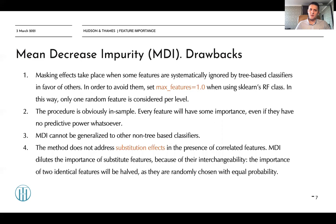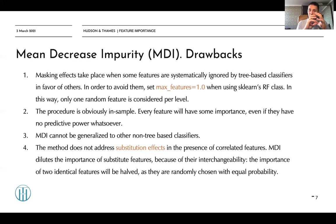Let's discuss several drawbacks of the mean decrease impurity algorithm. The first issue is so-called masking effects. Masking effects occur when some features are systematically ignored by tree-based classifiers in favor of others. This happens because when several features are correlated, the classifier extracts information from one of them, and the correlated second feature ends up with very low impurity importance — despite potentially bringing lots of value. To avoid this, you can set max_features equal to one so that only one random feature is considered per tree.